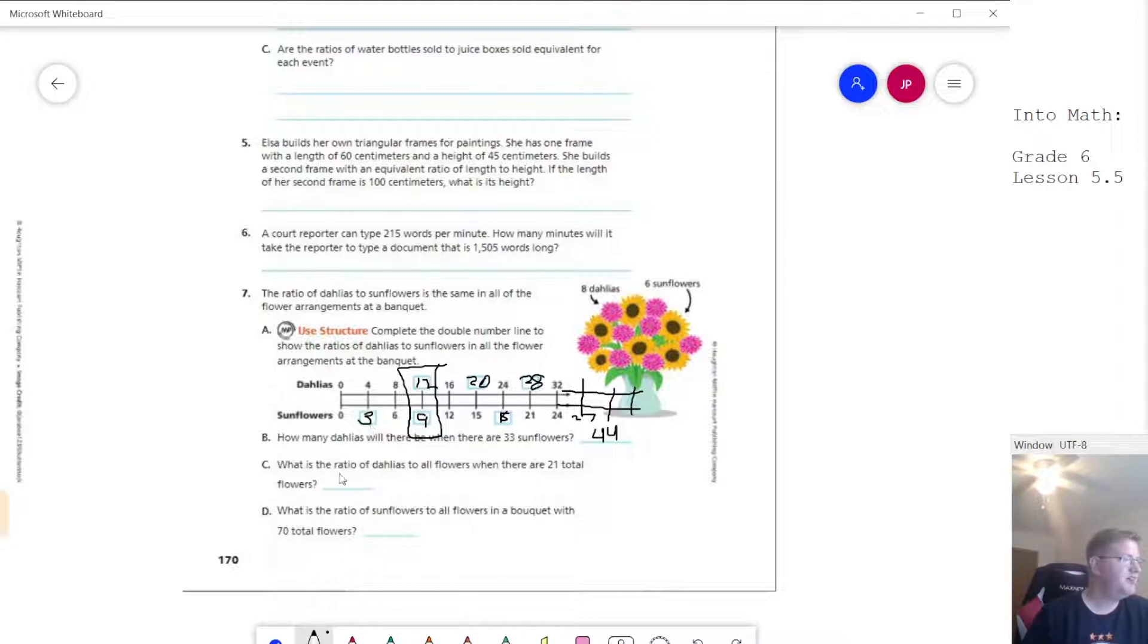And then the last one would be the ratio of sunflowers to all flowers when we have 70 total flowers. So the one where we're going to have 70 total flowers should be this one. Sorry, I was looking at that like it was the next number we were counting by. So it should be this spot right here. So sunflowers would be 30 to 70.